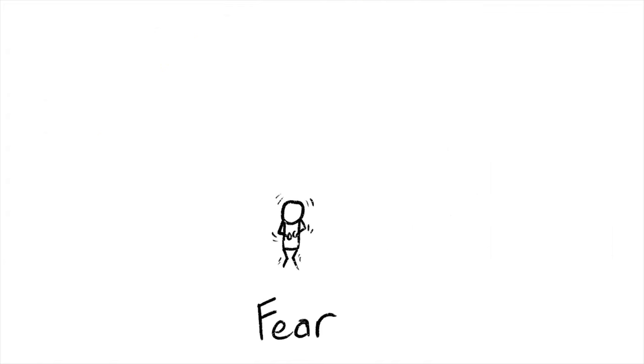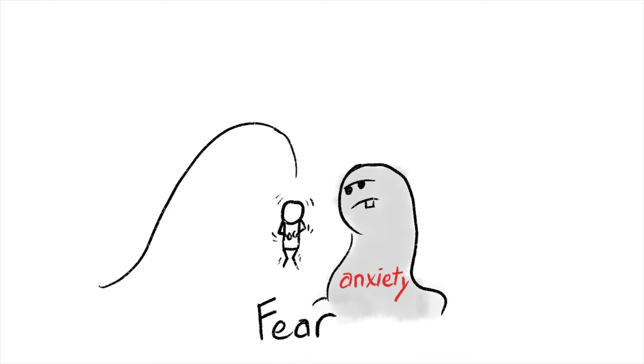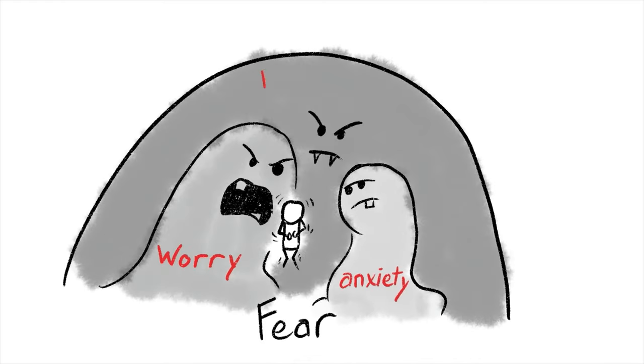Fear has many forms. Mild example is anxiety. Chronic is worrying. Extreme is paranoia. Fear is the predominant emotion of the world.